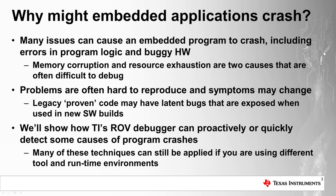Memory corruption is particularly nasty in that the symptoms can change. If you see a problem and then make changes to your application, you've moved code and data around, and the problem might go away or become different because a different piece of data is now being corrupted. Memory corruption bugs can also lie latent in a code base, and when that code is used in a new application with a different memory map, the bugs get exposed because they now corrupt locations with critical data.